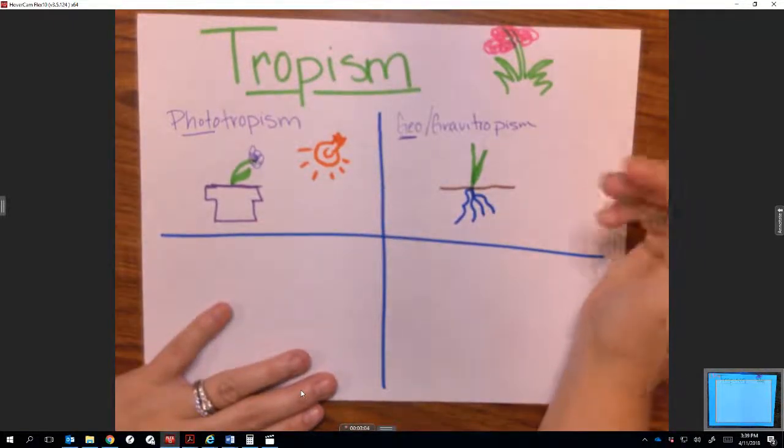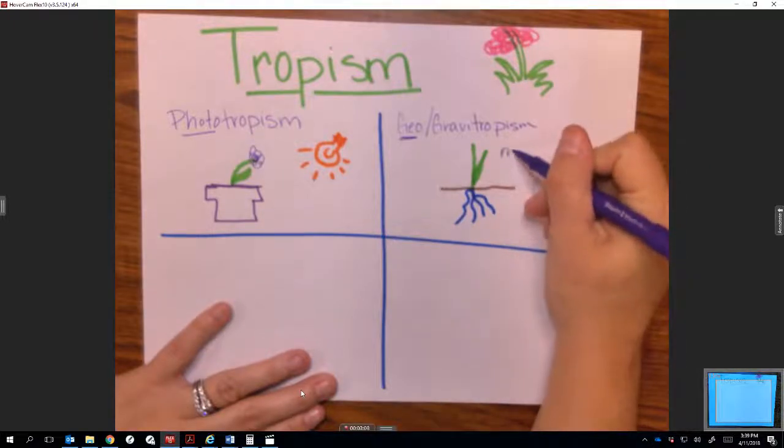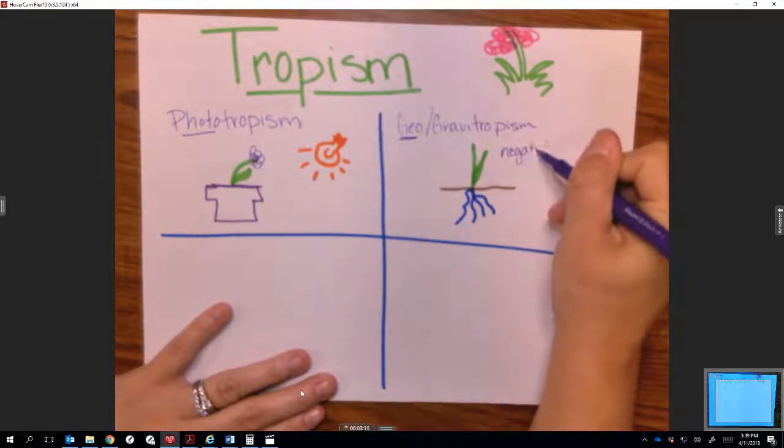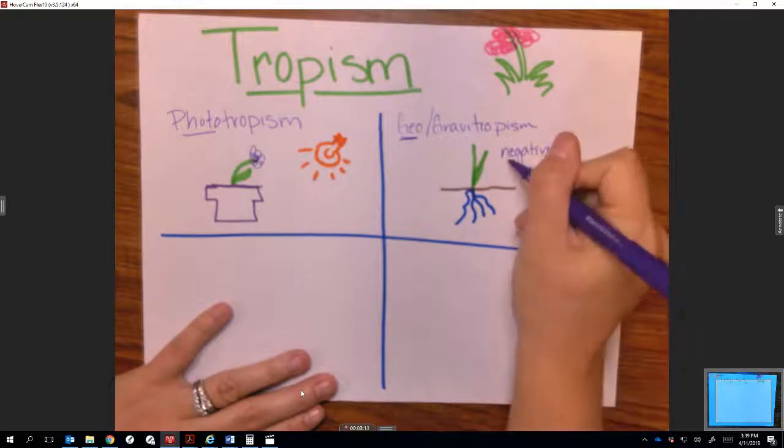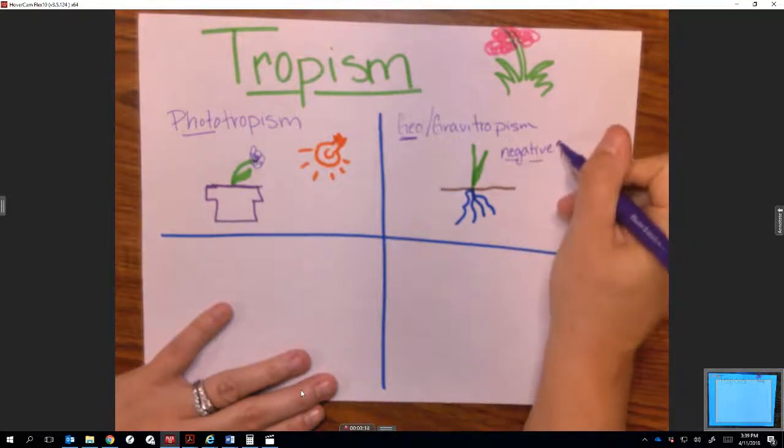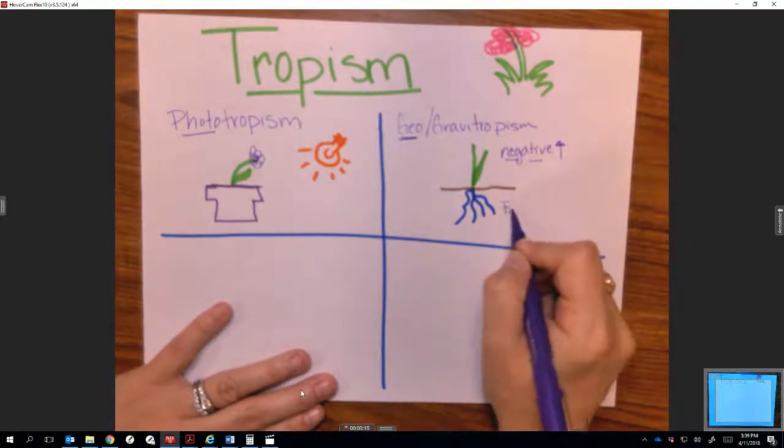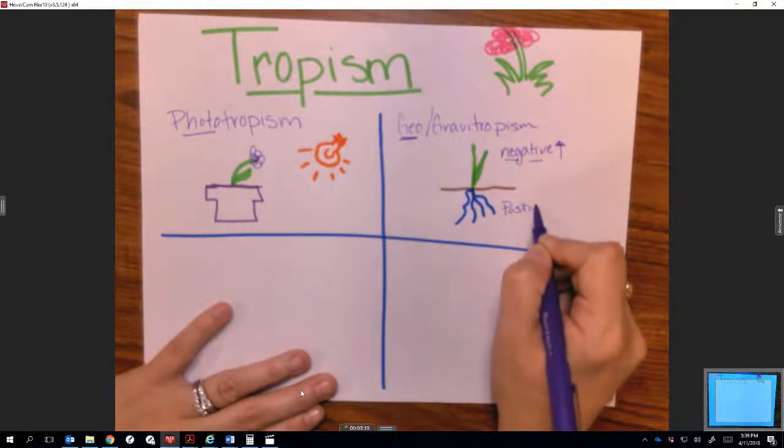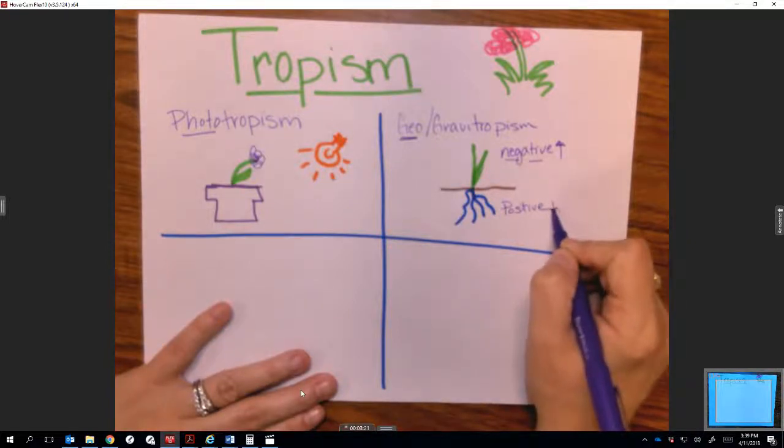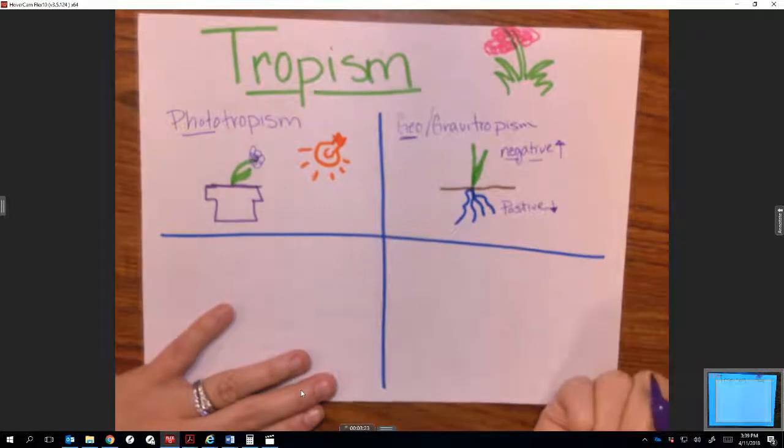In this case, a negative tropism is when it grows away. This negative geotropism is growing away from gravity. And this positive with the roots is growing towards gravity in the direction that gravity pulls it down.